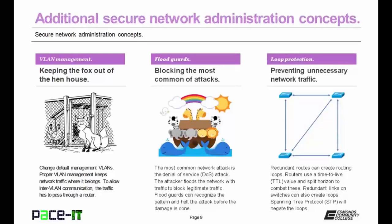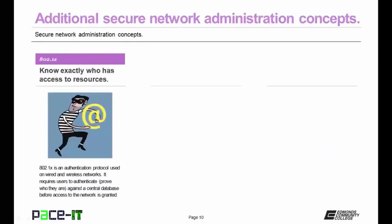Then there's loop protection — preventing unnecessary network traffic. Redundant routes can create routing loops. Routers use a time-to-live value and split horizon to combat routing loops. Redundant links on switches can also create loops within a switch network. Spanning tree protocol, or STP, will negate these loops from ever occurring. If possible, you should implement 802.1x — this helps you know exactly who has access to your networks. 802.1x is an authentication protocol used on wired and wireless networks. It requires users to authenticate against a central database before access to the network is granted.